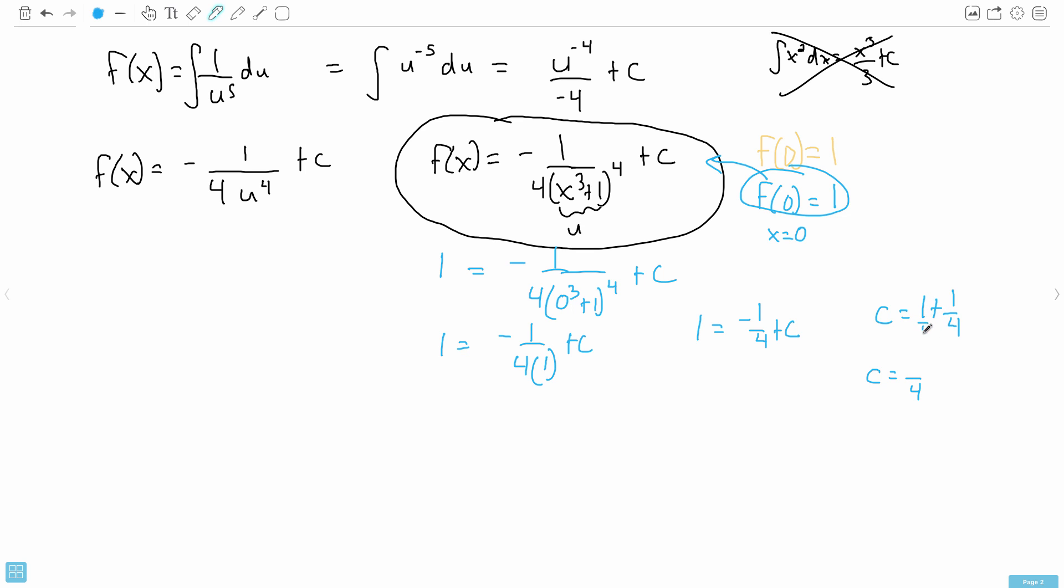So that means I can get, I need them all over 4. So I need something over 4. So this is like 1 over 1 right now. I need them both over 4. So 1 times what gives you 4? Well, 4. So 1 times 4 is 4. So 4 over 4 is the same thing. Plus 1 over 4. So I can say that c equals 4 over 4 plus 1 over 4, which is 5 over 4.